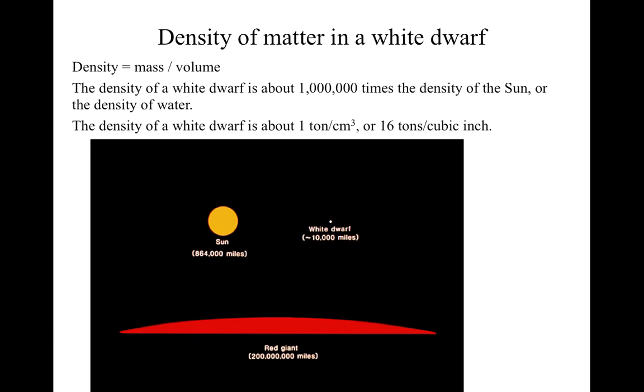So here's a comparison of the different sources. The sun on the left, a white dwarf on the right, and a red giant down below, to just give you a feel for the different sizes. The density of the white dwarf is enormous. Remember we said the density of the sun is about the density of water, but the density of white dwarf, instead of being one ton per cubic meter, is one ton per cubic centimeter, so about a million times the density of the sun, about 16 tons per cubic inch.